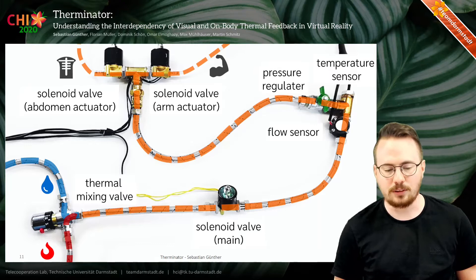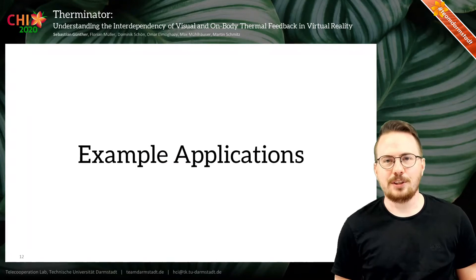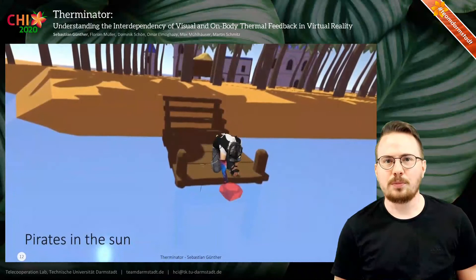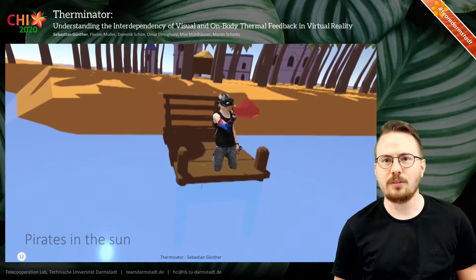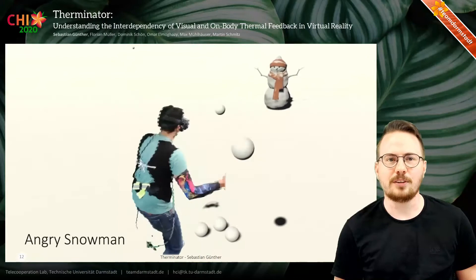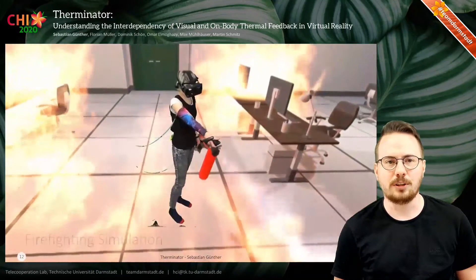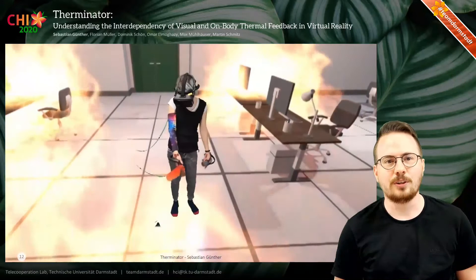After having our system ready, we implemented three example applications. In the first, the user is a pirate on an island and needs to find precious gems, which can be found in the water and will cool down the user's arm when reaching for them. In the second application, a user plays a snowball game and every time they get hit by a snowball, the abdomen cools down quickly and slowly returns to neutral temperature after some time. In the final application, we simulate an emergency task where the user has to put out fires in a building — the more flames are extinguished, the cooler the environment gets.